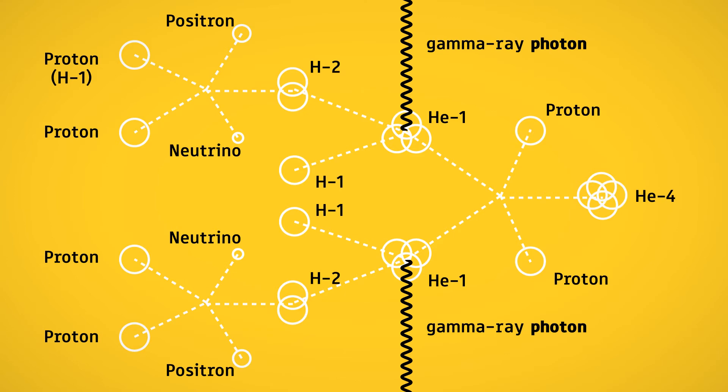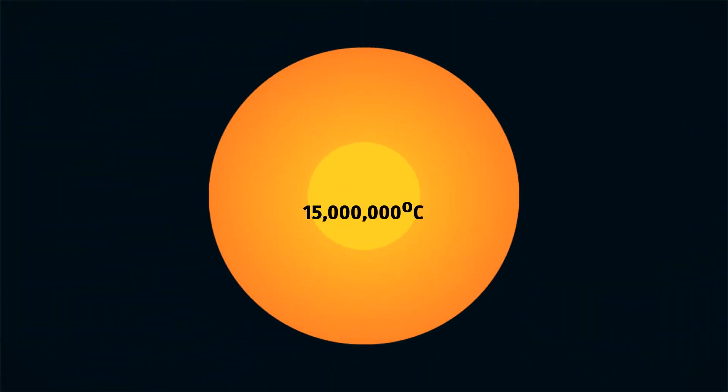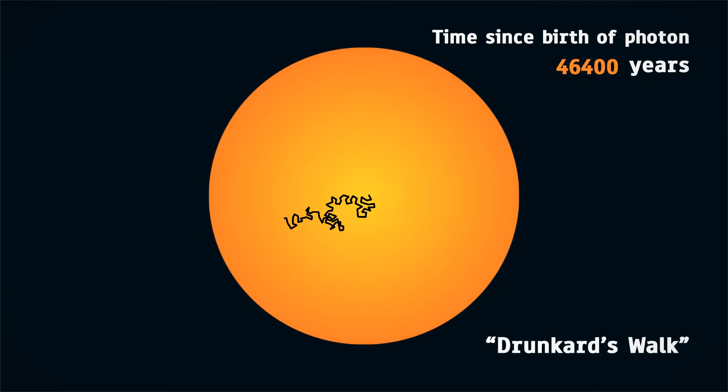These photons, born at an immense temperature of 15 million degrees, have to struggle to reach the surface of the sun. Before the photons can even travel a few millimeters, they are absorbed and re-emitted by gas molecules in random directions over and over for about 10,000 to 200,000 years before they can reach the surface of the sun.